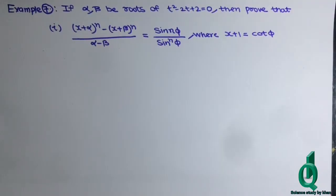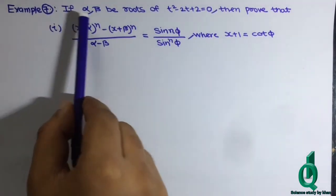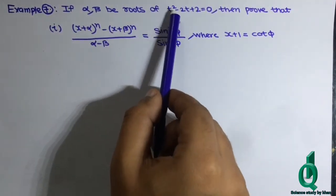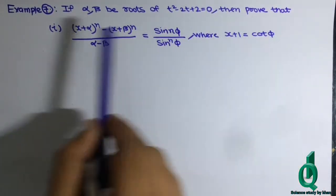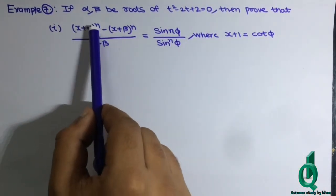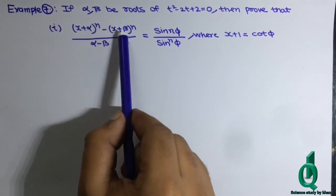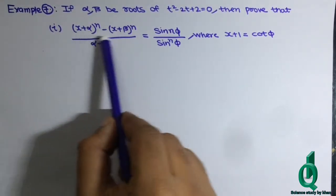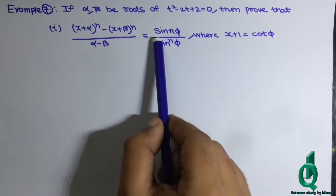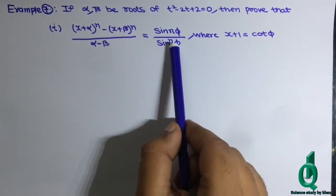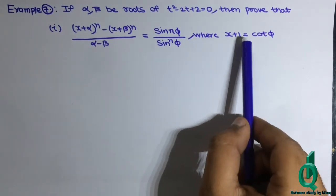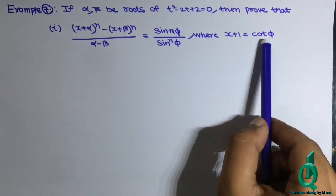Hello everyone, Assalamu Alaikum, I hope you have a wonderful day. Let's start a new question: if alpha and beta are roots of t² - 2t + 2 = 0, then prove that (x + α)ⁿ - (x + β)ⁿ divided by (α - β) equals sin(nφ) upon sinⁿ(φ), where x + 1 = cot(φ).